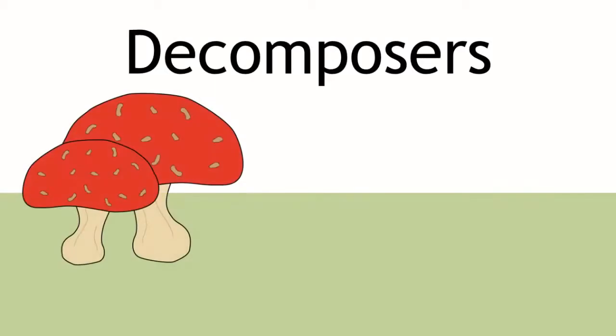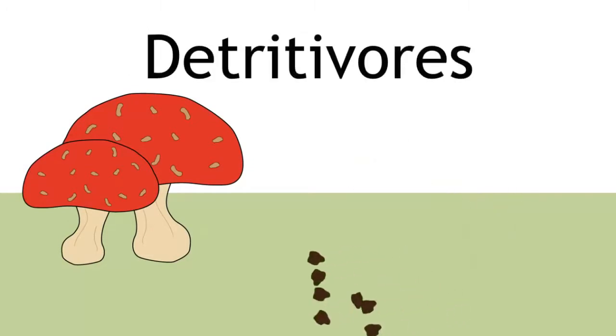Decomposers are also considered to occupy their own trophic level. They break down dead animal and plant matter, also known as the detritivores.